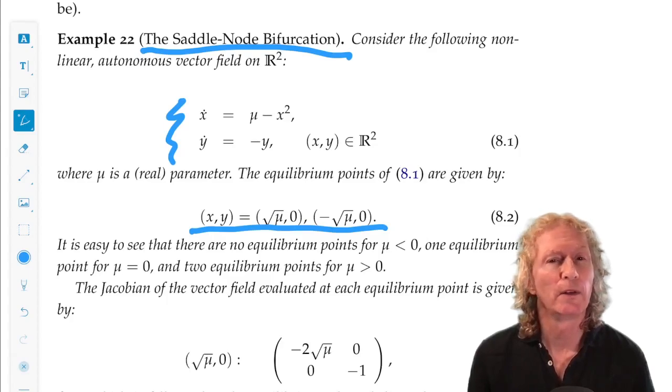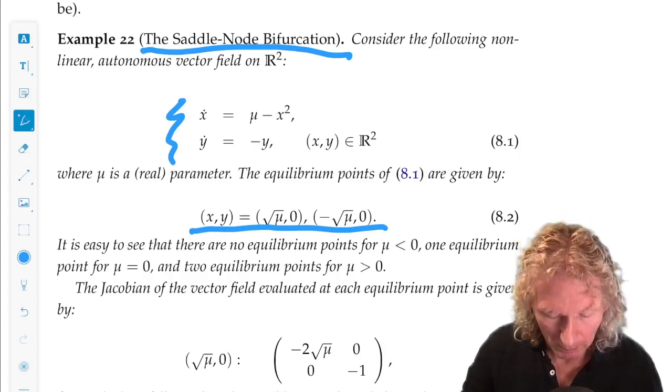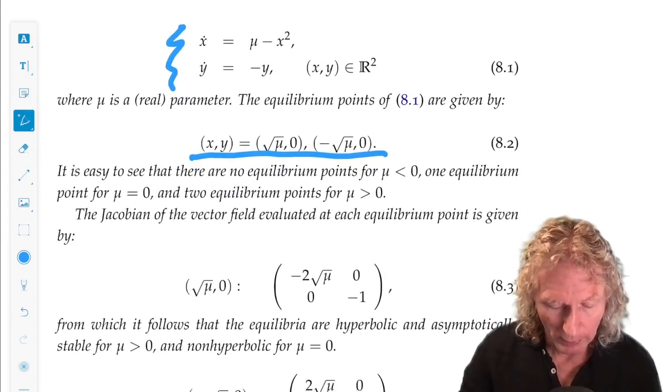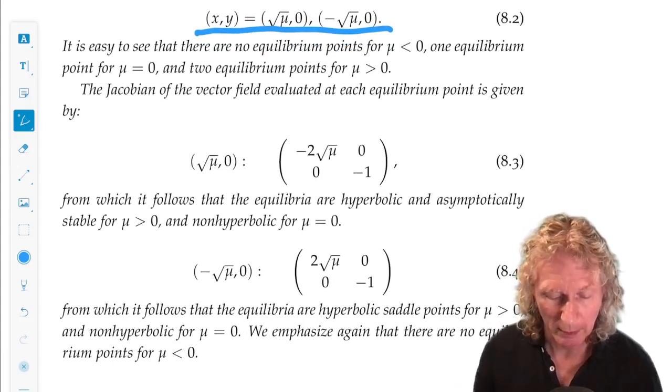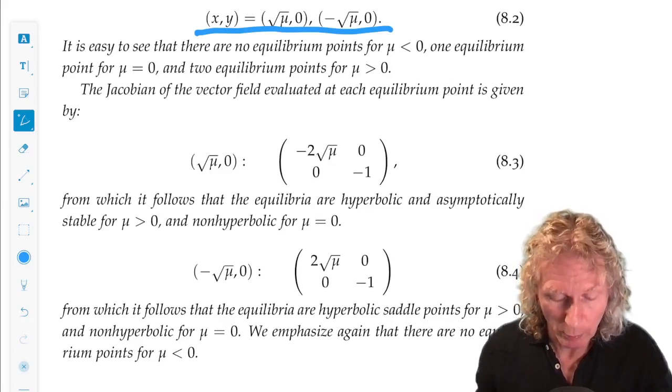and a single equilibrium point for mu equals zero, and these continuously vary with mu. We can compute their linearized stability by looking at the Jacobian of the vector field evaluated at each equilibrium point.